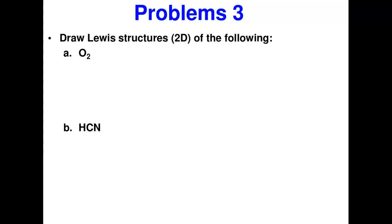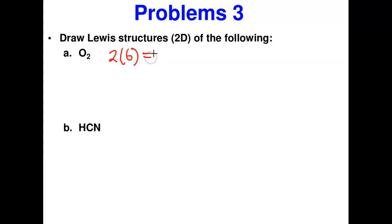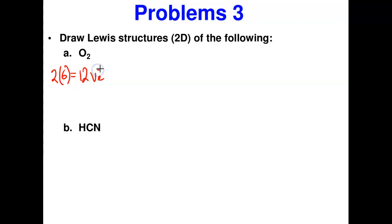Now let's draw Lewis structures. For O2: oxygen is in group six and there are two atoms, so two times six gives 12 valence electrons. With just two atoms, we don't need to worry about which is the central atom — just choose one and begin to allocate. We have 12 electrons to distribute.